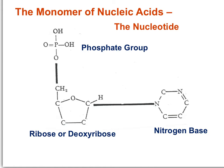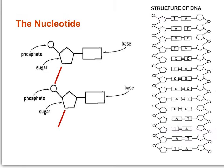The difficult part of gaining control of nucleic acid monomers is that not only do you need to be able to recognize a nucleotide, you need to know its component parts: a pentose sugar — deoxyribose or ribose — a nitrogen base, and a phosphate group. In this diagram, you can see the nucleotide monomer with its component parts well labeled.